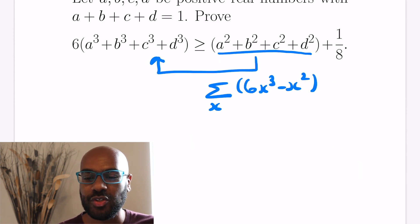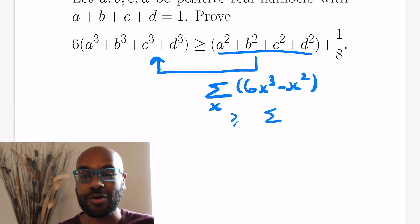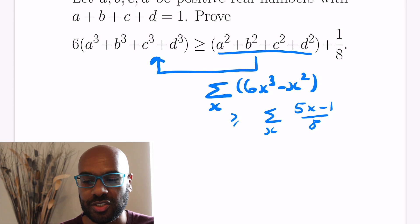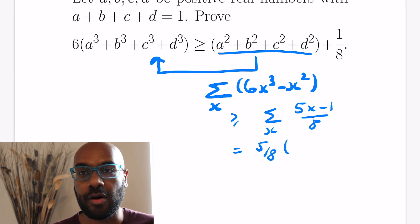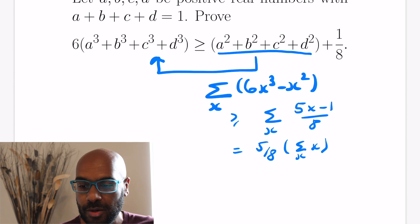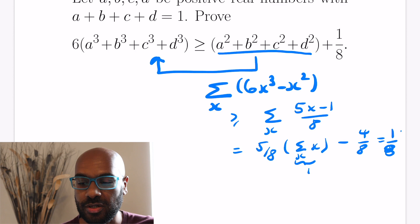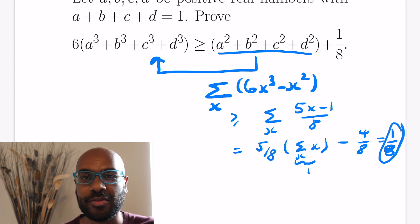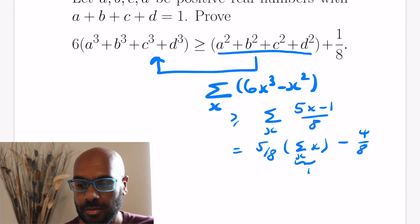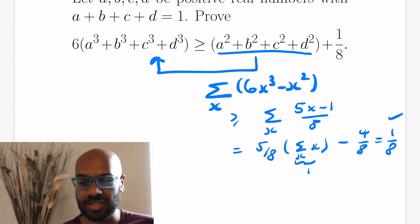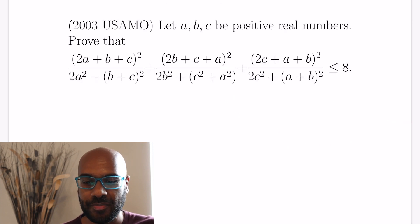Now we use that result in our general inequality. The sum over all variables of (6x³ - x²) is at least the sum over all variables of (5x - 1)/8. Pulling out 5/8, the sum of all variables is 1 (given), and we have four terms of -1/8. So the expression is bounded below by 5/8 · 1 - 4/8 = 1/8. We have exactly what we wanted.